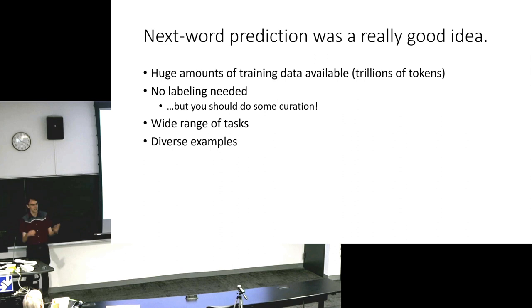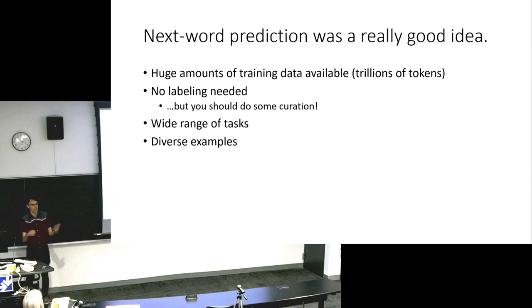So this is a really good idea, because we get lots of training data, trillions of tokens on the internet. You don't need to label anything, but maybe you want to do some curation because you don't want to necessarily learn from everything on the internet. There's a wide range of tasks that are just embodied into this next word prediction, some diversity in examples. Of course, maybe there should be more diversity in examples because most internet text leans English, American, affluent, sort of biased. But compared with other examples, it's sure a lot more diverse ways to go on there.